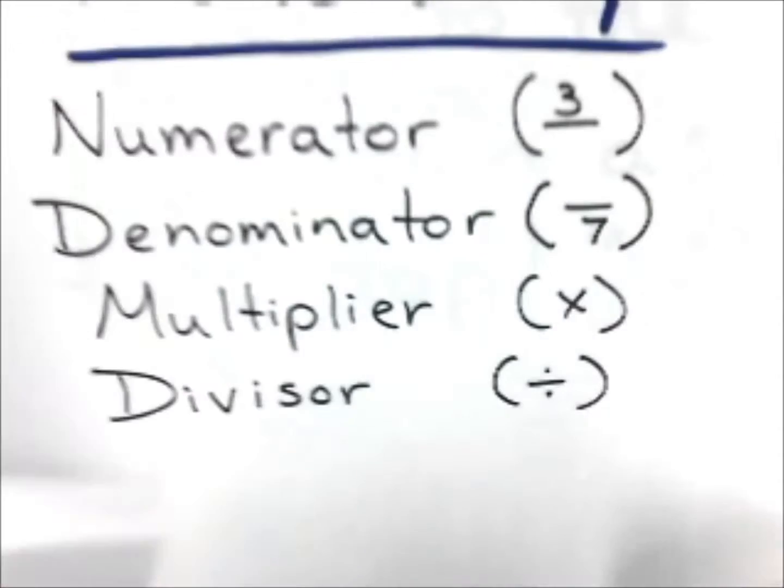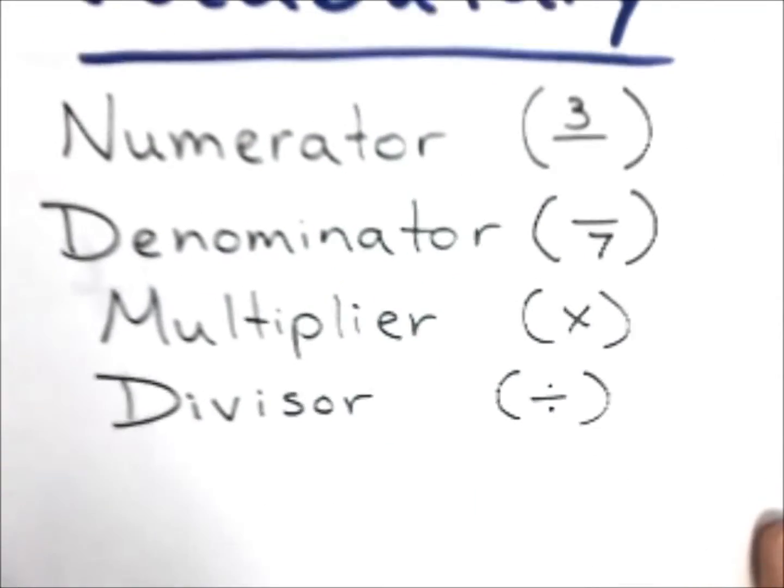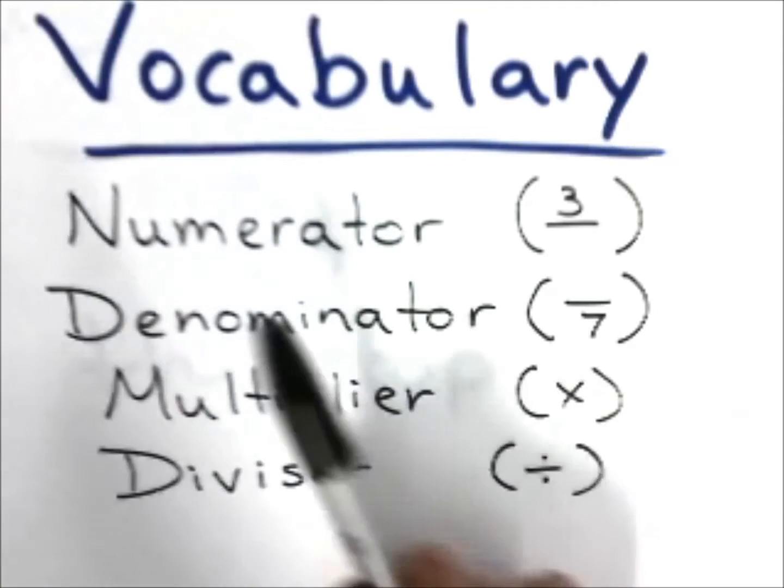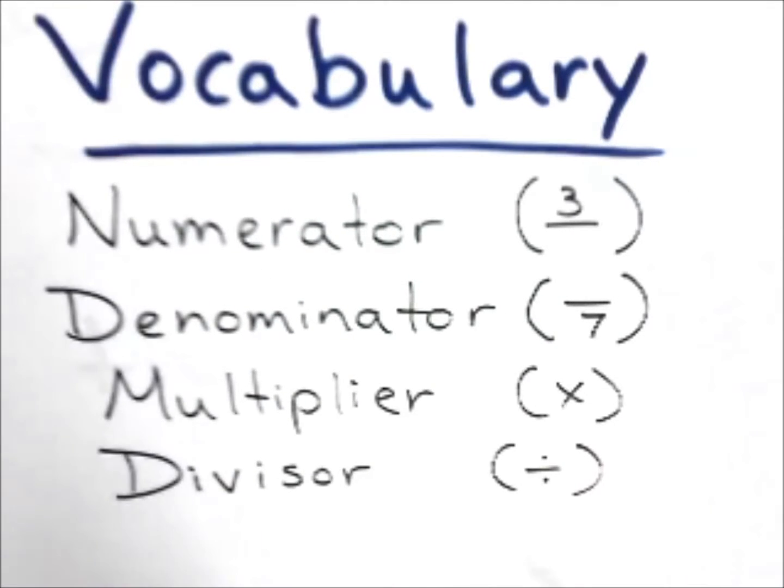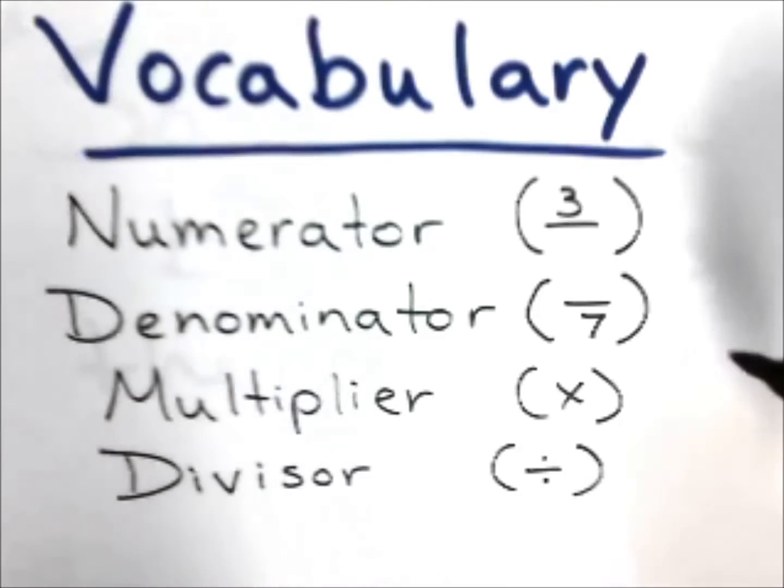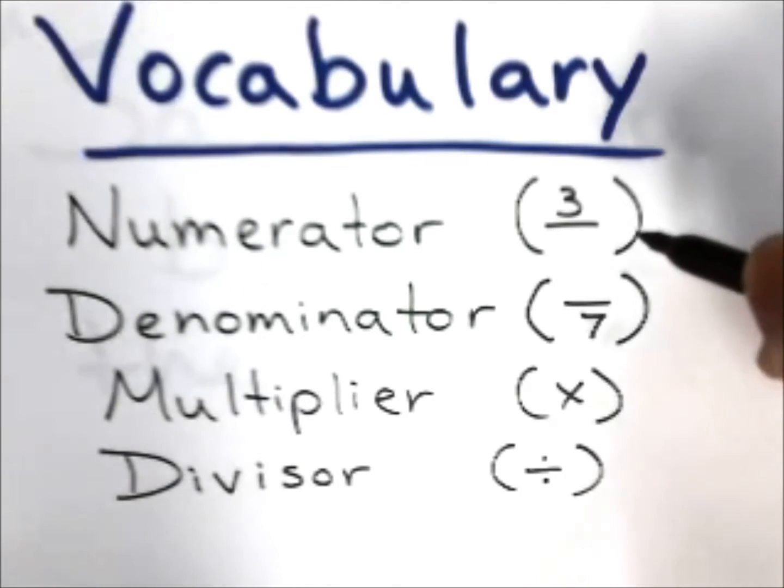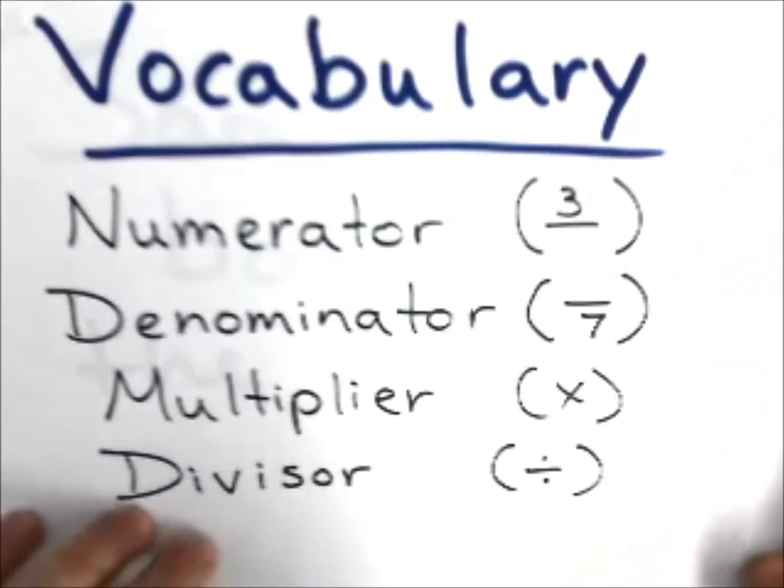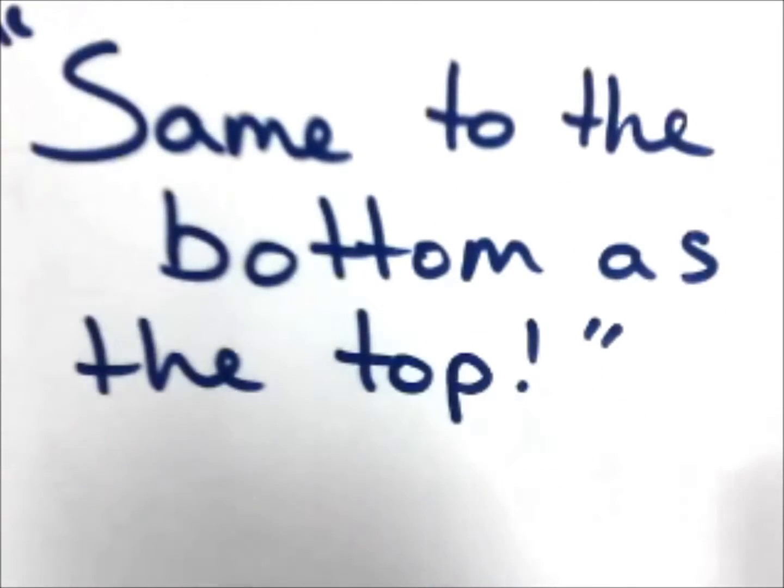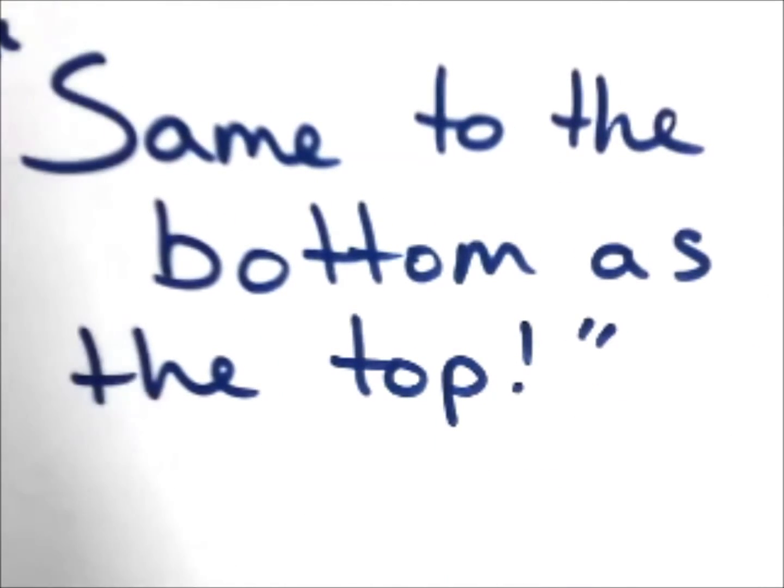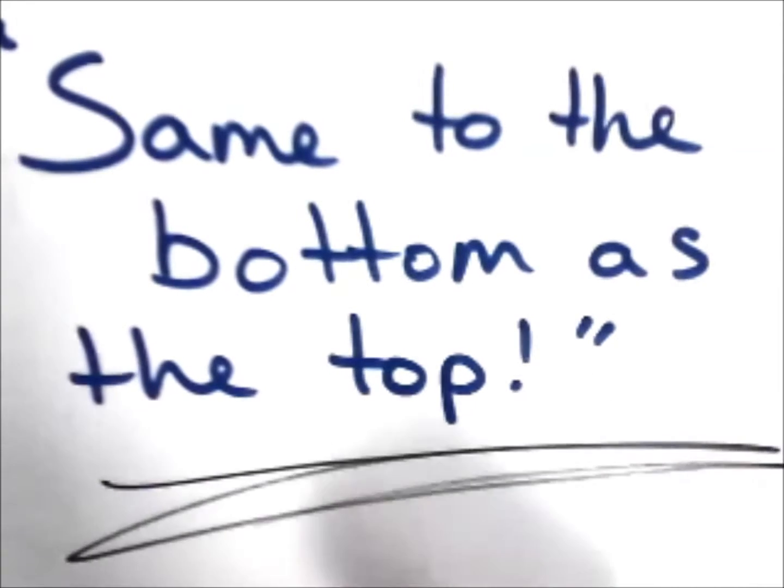Some of the key vocabulary that we have for today: we have numerator, which is the number on the top of the fraction; denominator, which is the number on the bottom; multiplier, the number we are going to multiply both the numerator and denominator by; and the divisor is just like the multiplier but you divide—you divide the numerator and the denominator by the same number. Because everybody knows you do the same to the bottom as the top.